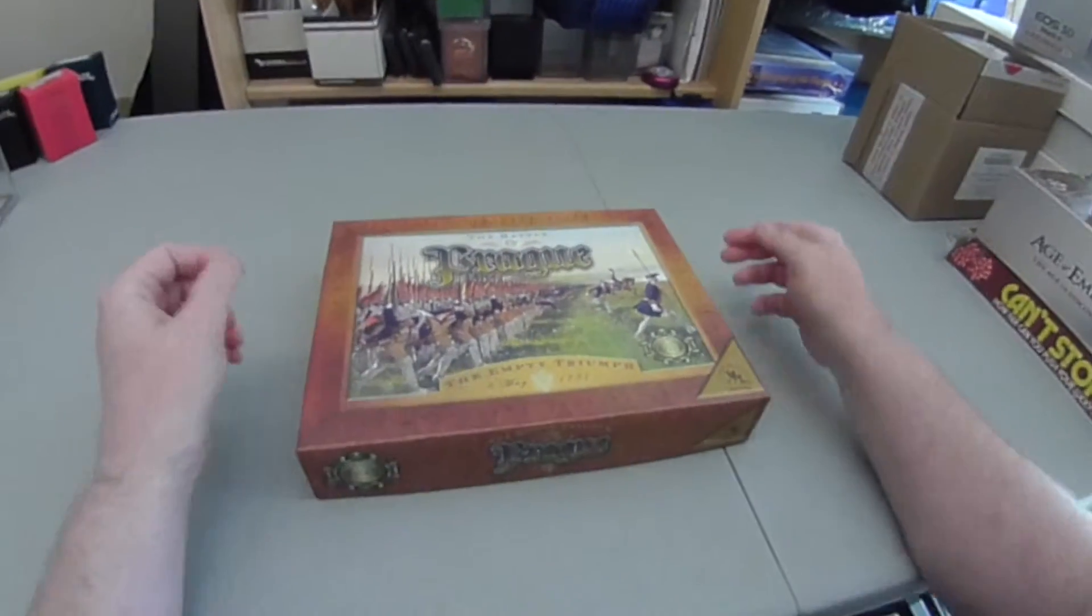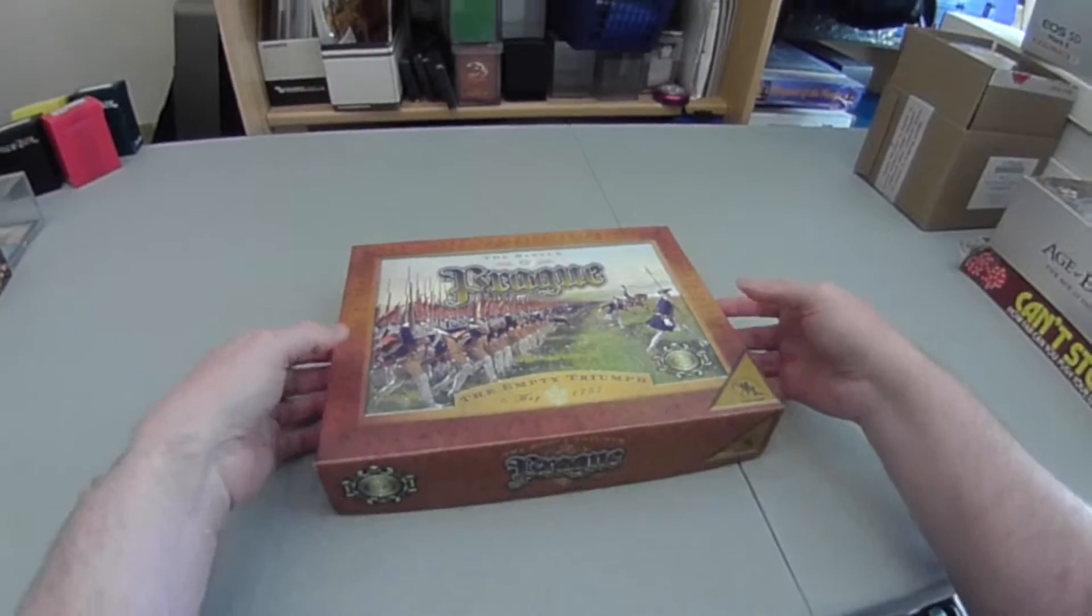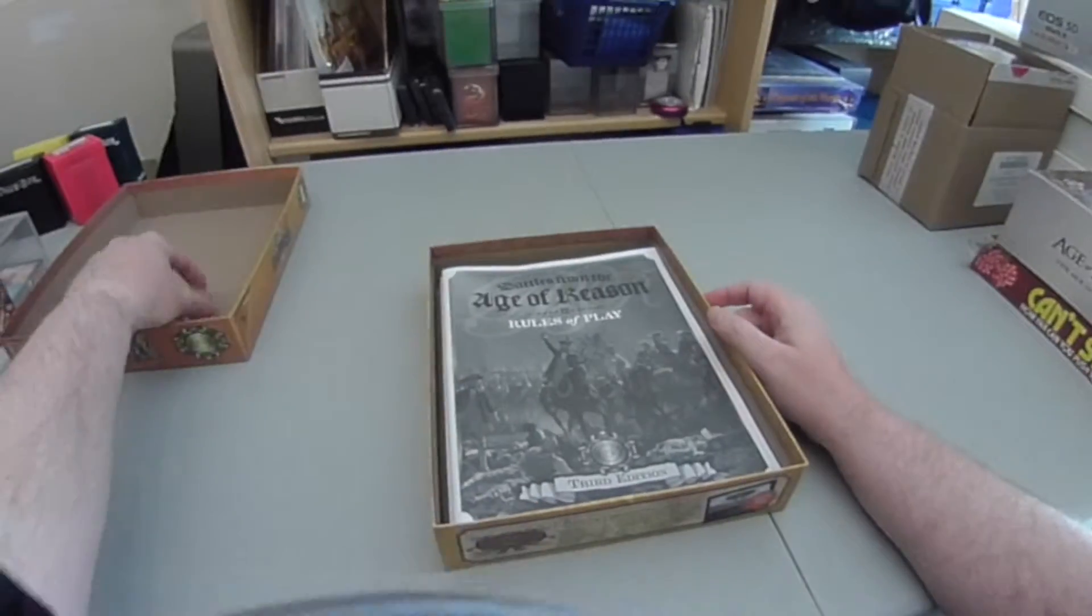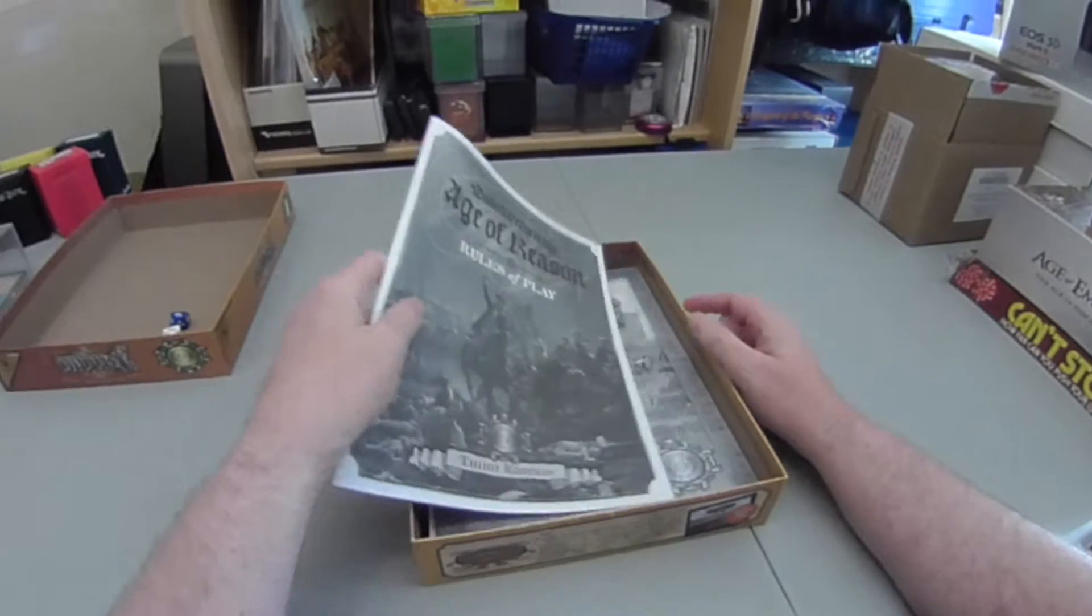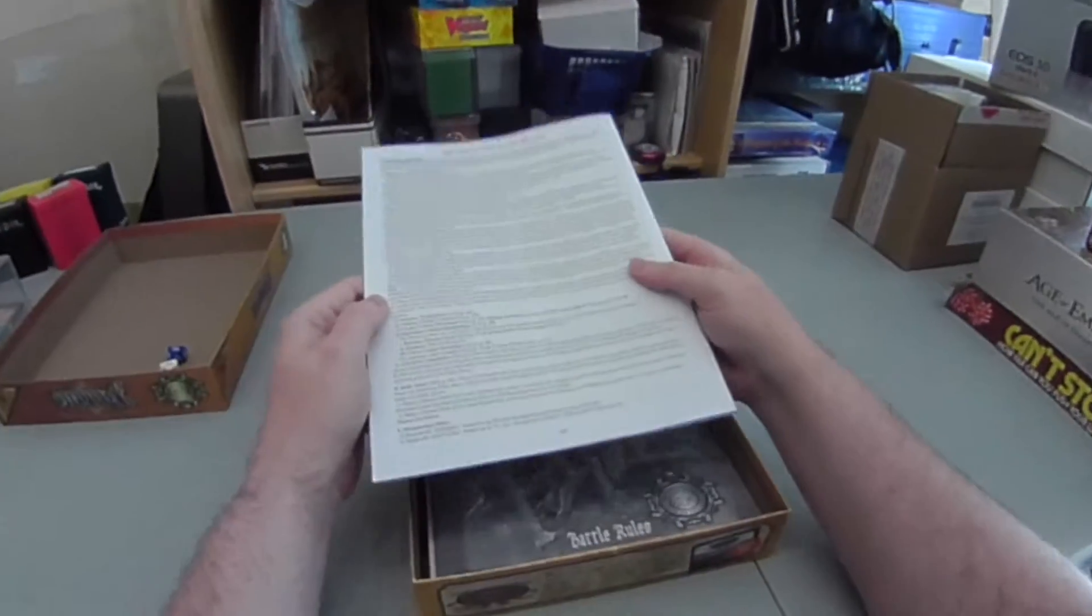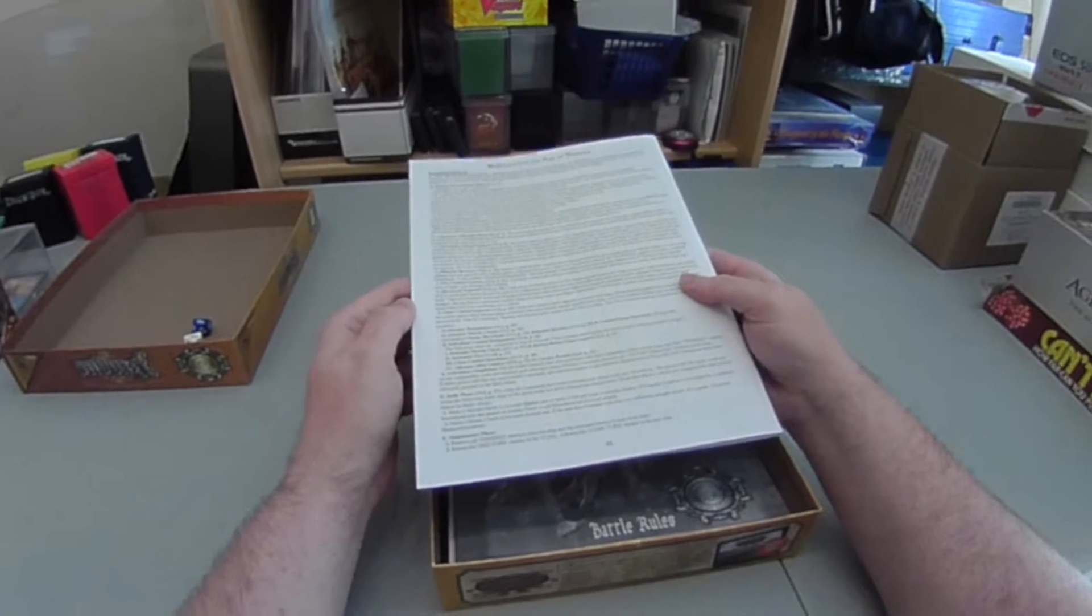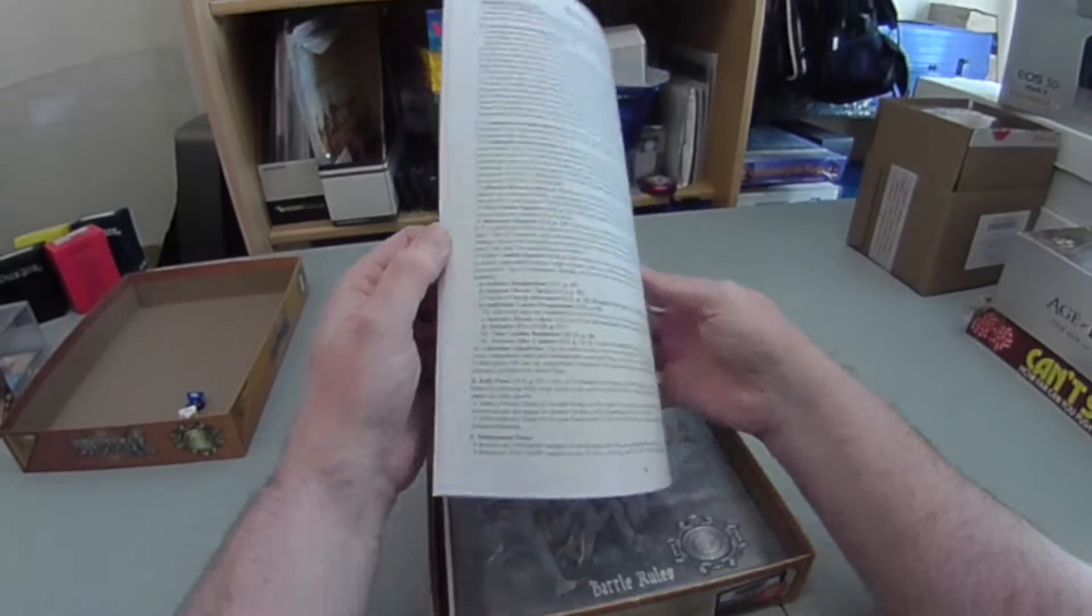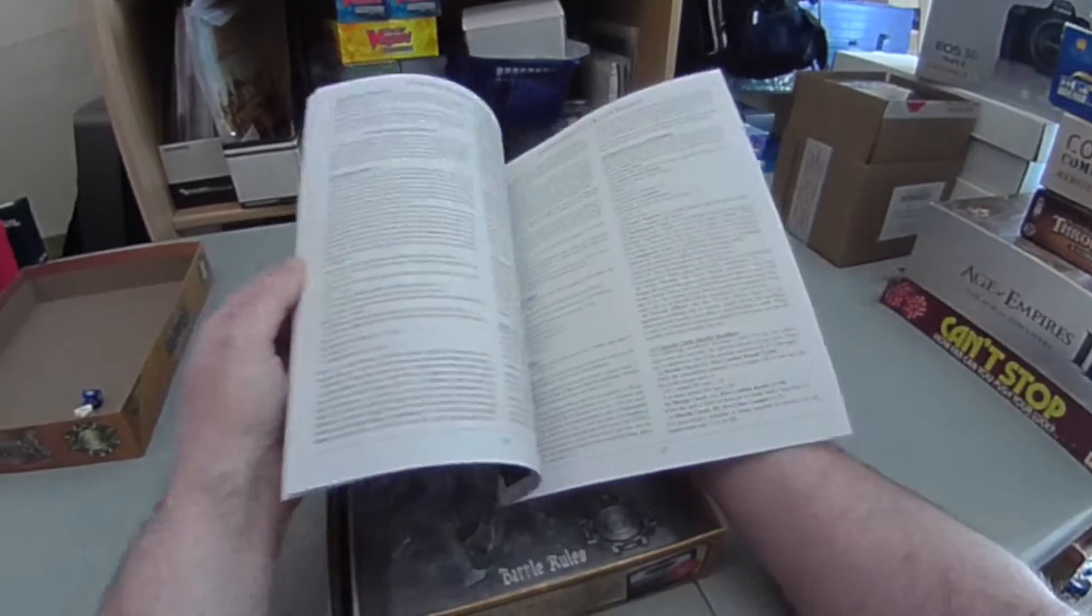So let's have a look what's in the box. First of all we have the Battles from the Age of Reason rules of play. These are generic rules for the entire system and the system covers Seven Years War, American War of Independence, War of the Austrian Succession battles, basically 18th century warfare.